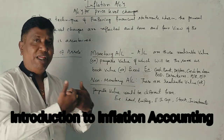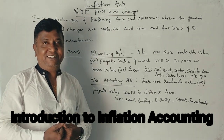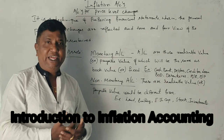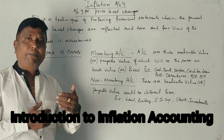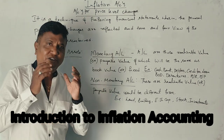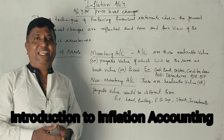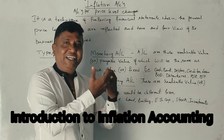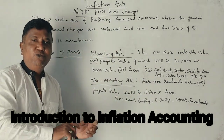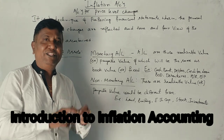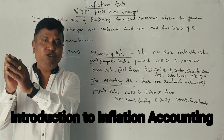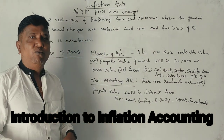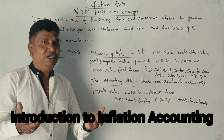What we have learnt from the previous years and previous classes: we used to prepare a balance sheet and an income statement. When we prepared a balance sheet, the values we used to take were the balances extracted from the ledger accounts. We used to prepare a trial balance, and with the help of the trial balance, all those values would be kept in the balance sheet to find out the financial position of the business.